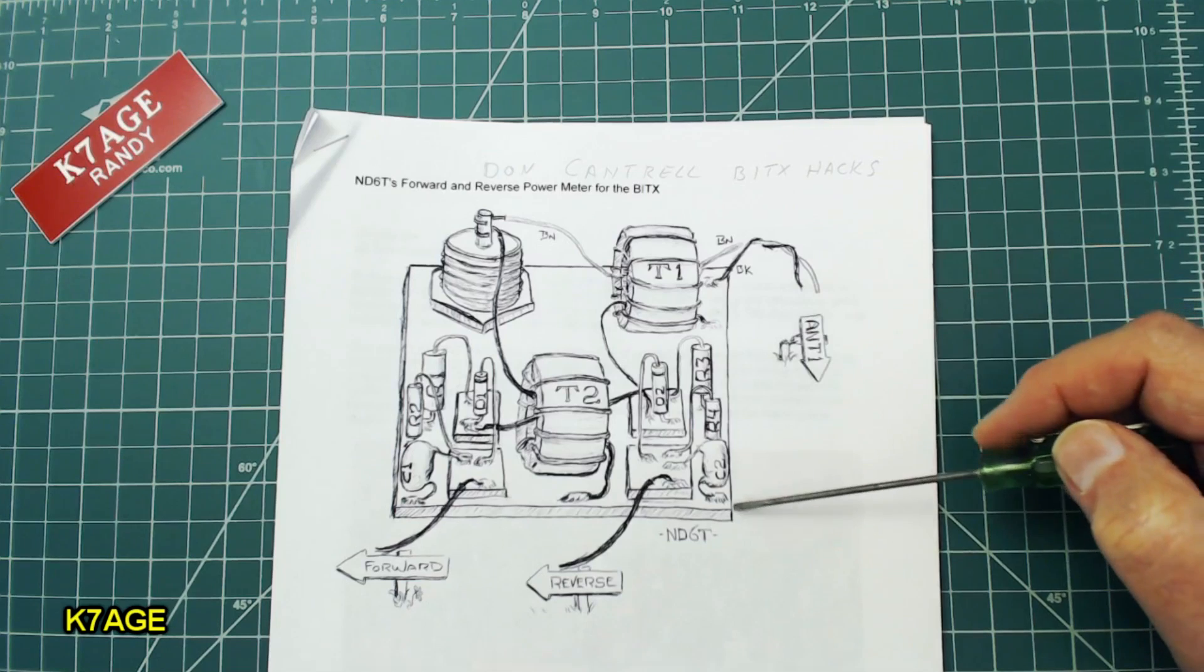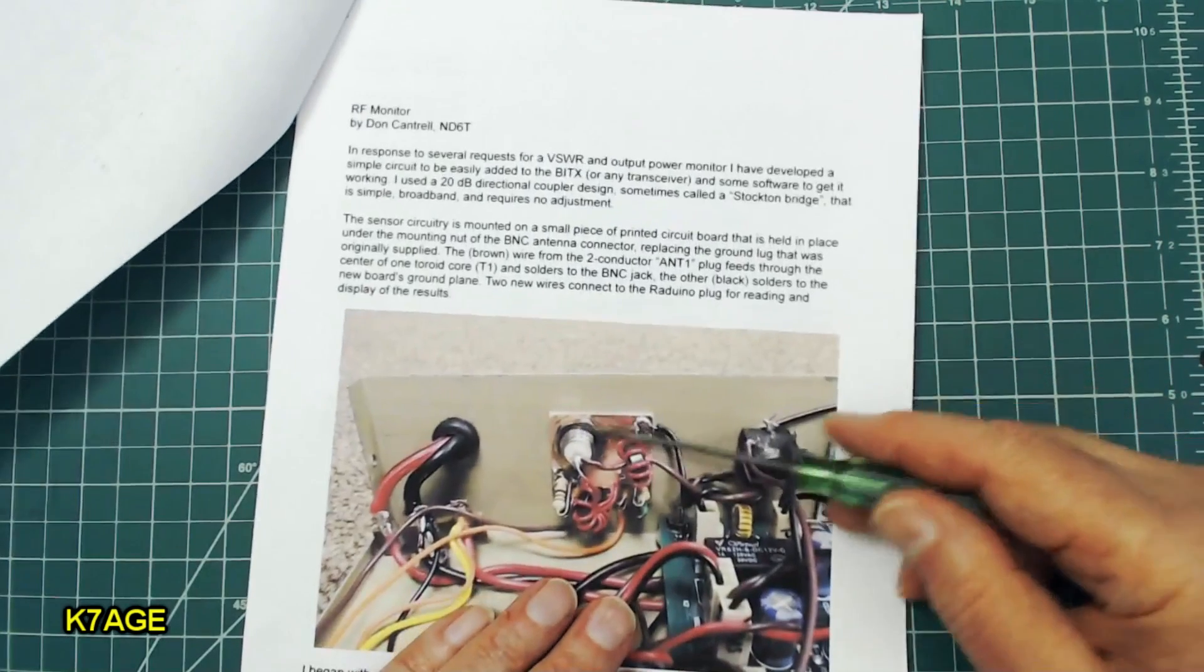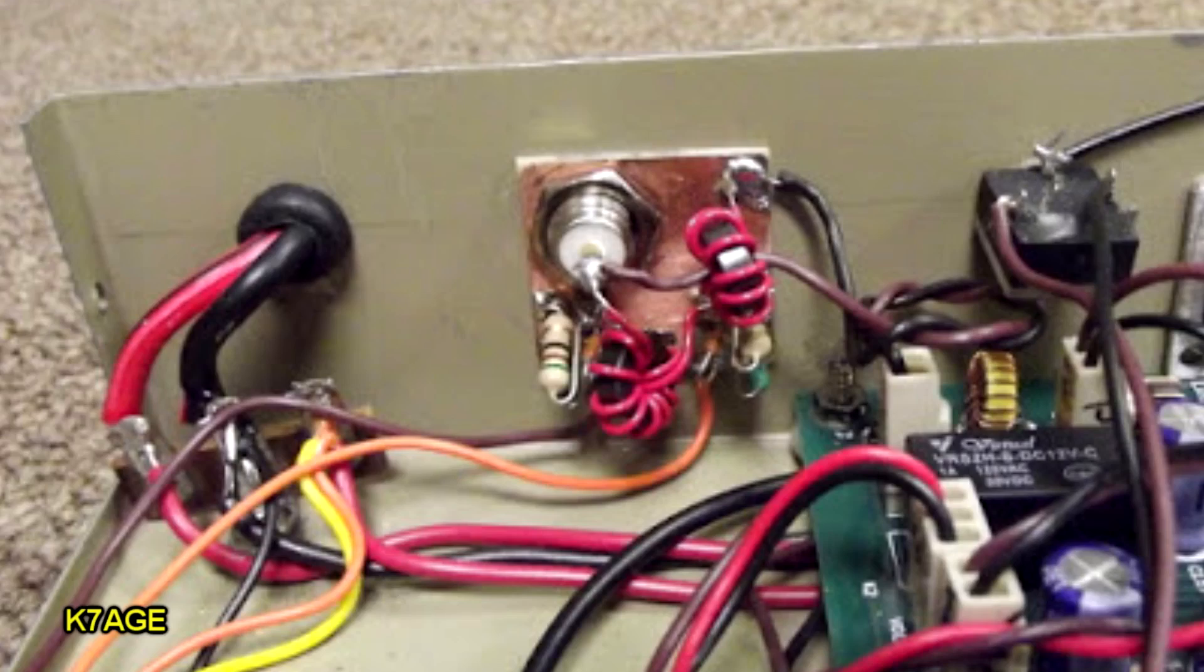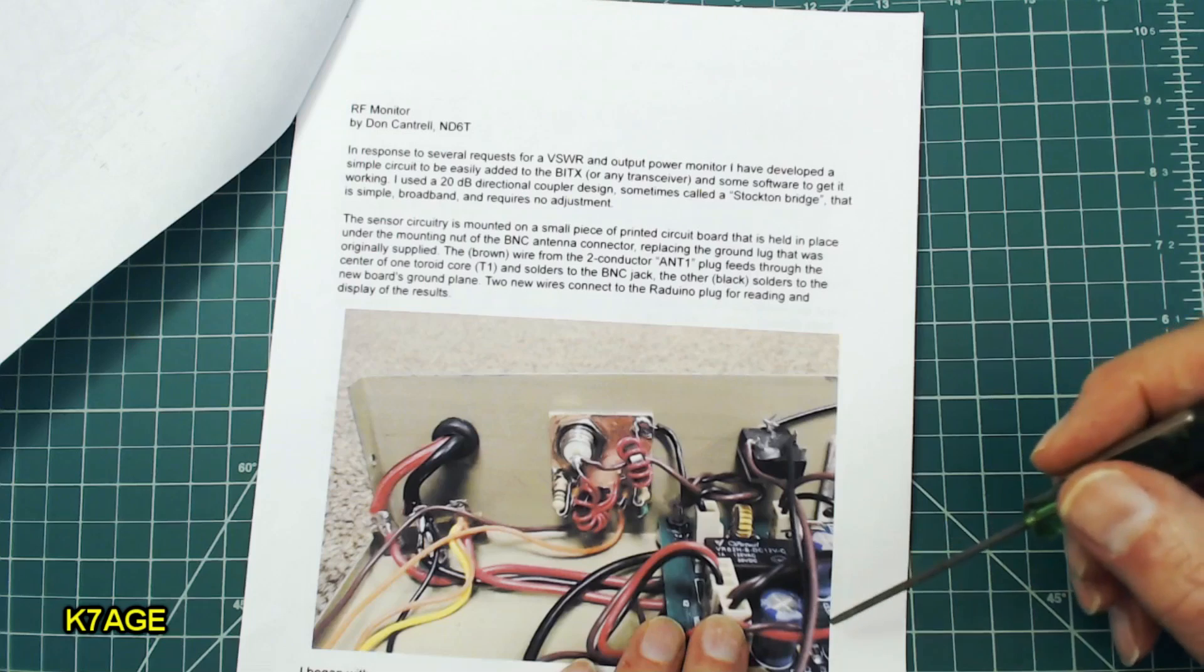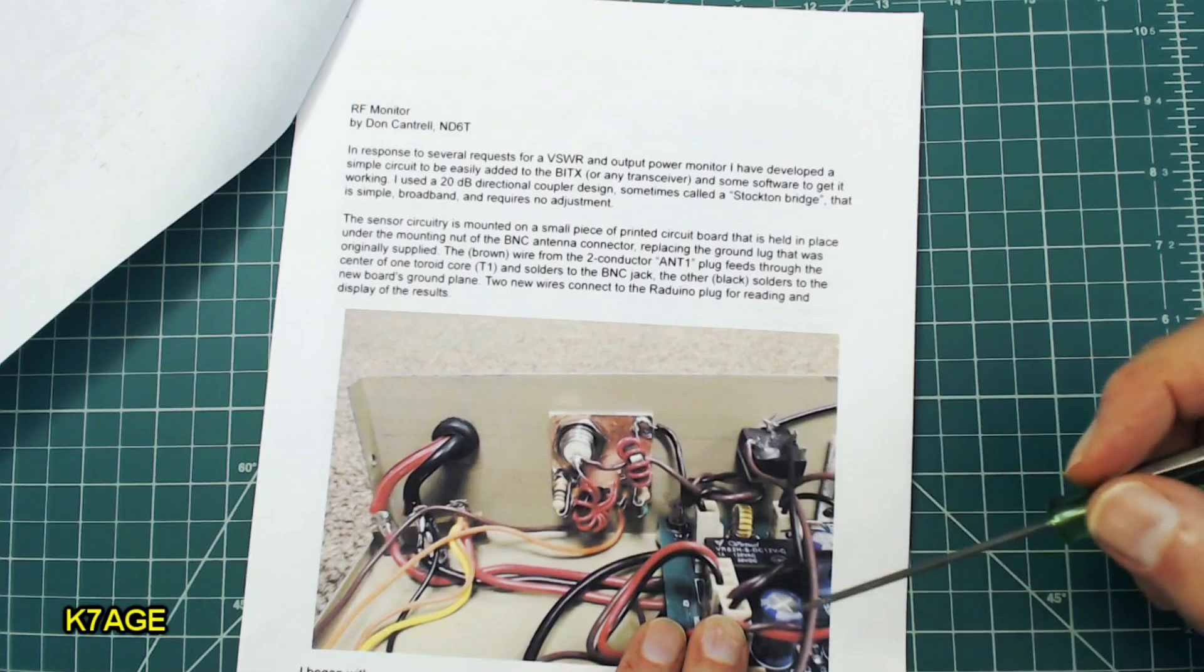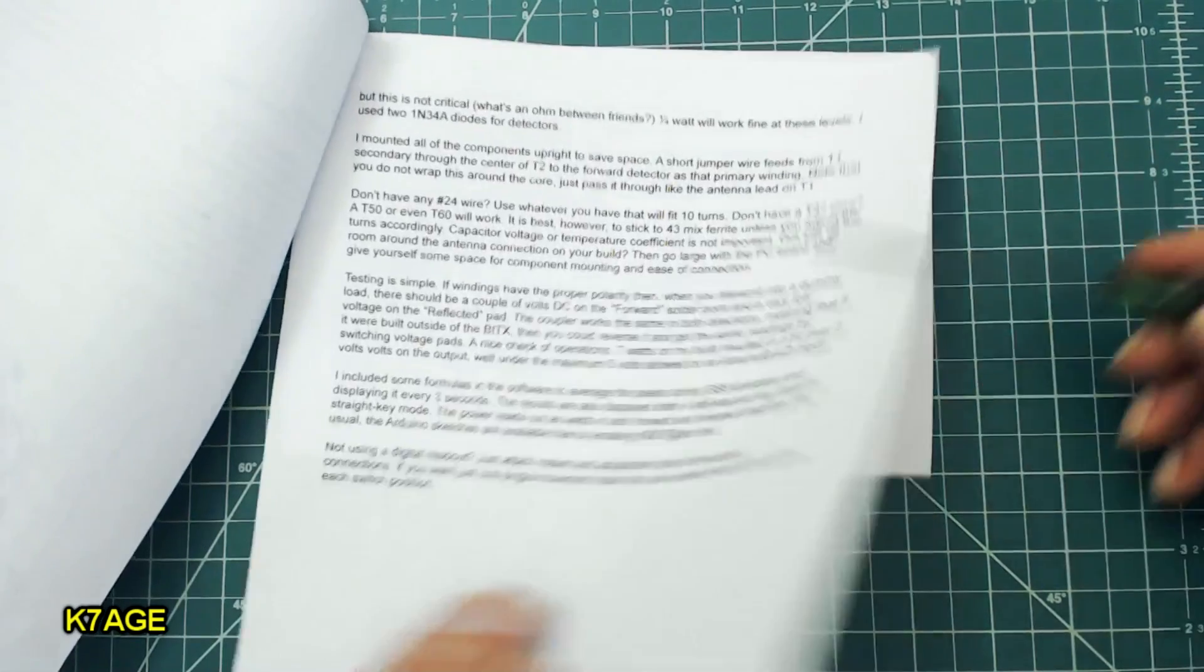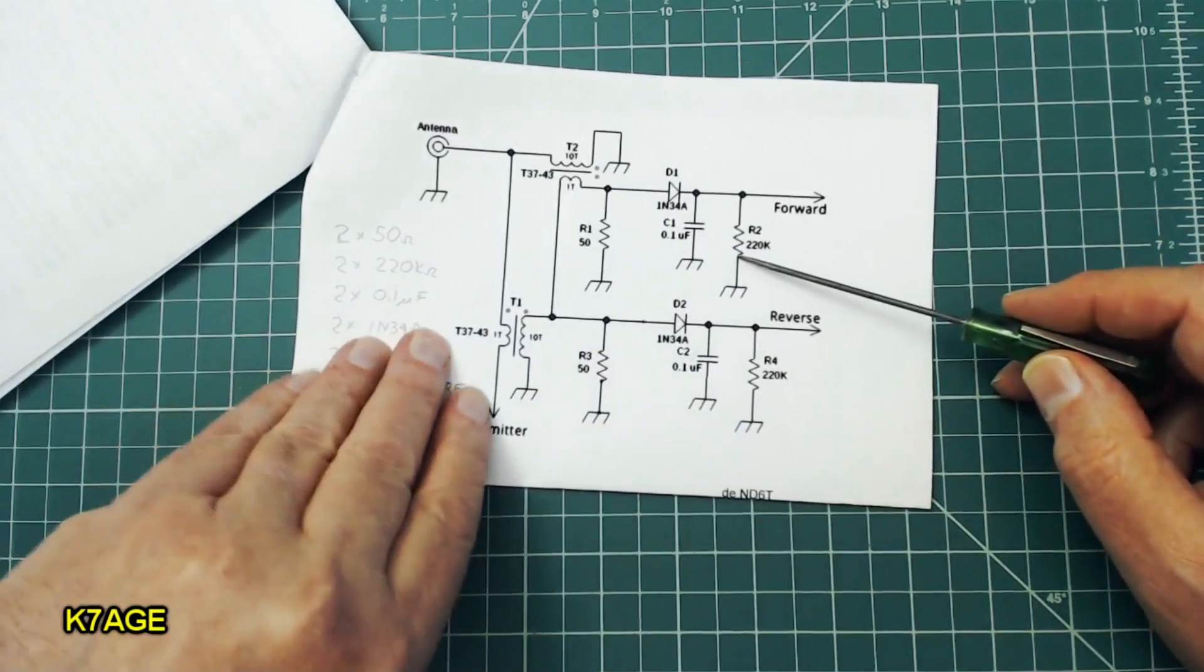He has a lot of modifications for the BitX, and he built his on a little printed circuit board to mount right on the back of his BitX 40 case, and has a pass-through for the RF connector along with a couple toroids, and he used the processor on the Radrino board to actually measure the voltage to give him a relative output. So if you'd like to build it that way, you can go to his website and find information about how he did that.